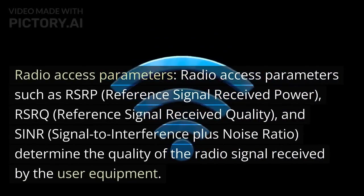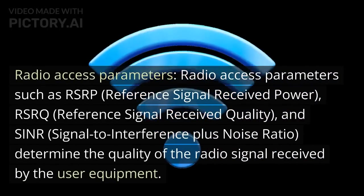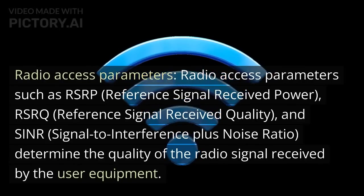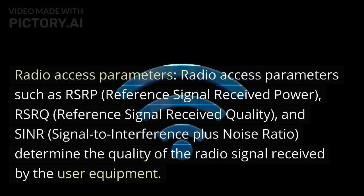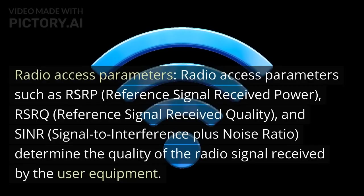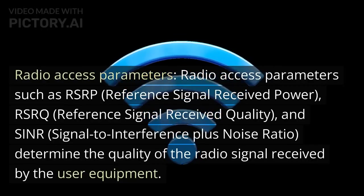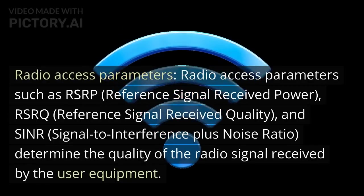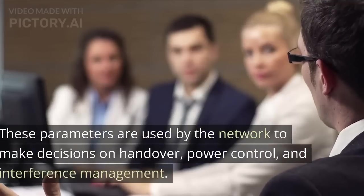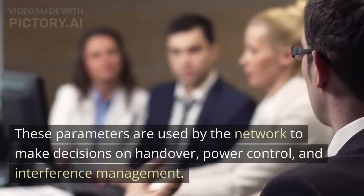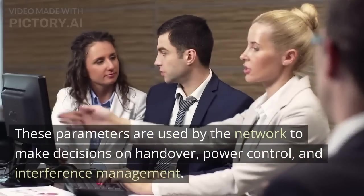Radio access parameters such as RSRP (reference signal received power), RSRQ (reference signal received quality), and SINR (signal to interference plus noise ratio) determine the quality of the radio signal received by the user equipment. These parameters are used by the network to make decisions on handover, power control, and interference management.